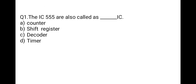The first question: IC 555 is also called as which IC? Options: first, counter; second, shift register; third, decoder; and last, timer. IC 555 is a timer which generates accurate and specific time delays. So the correct option is D, timer.